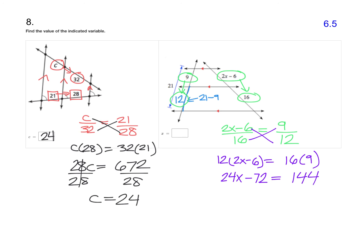Now let's collect all the X's on one side. So I'm going to add 72 to each side. That gets us down to 24X equals 216.